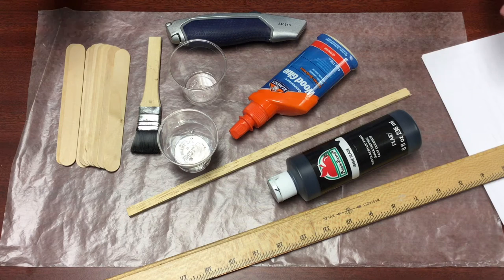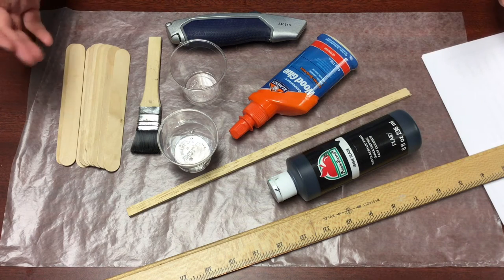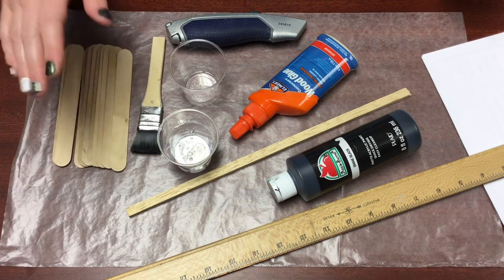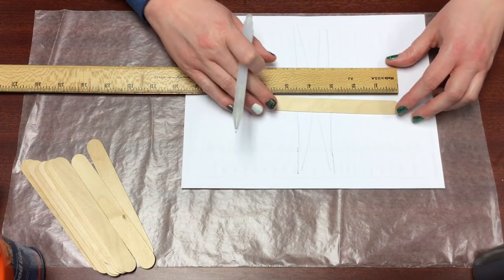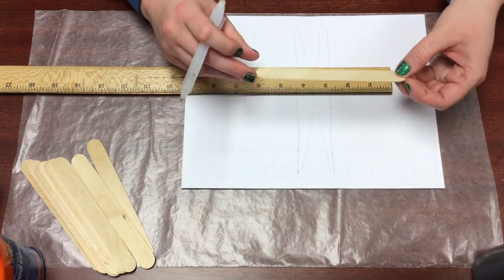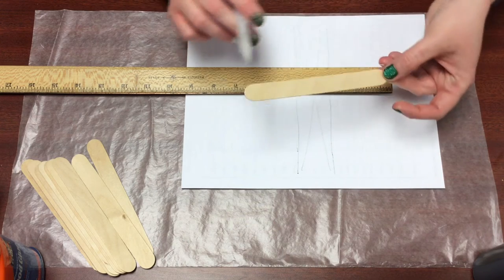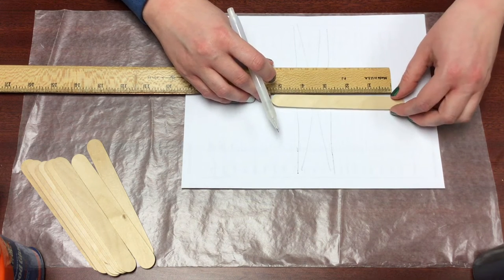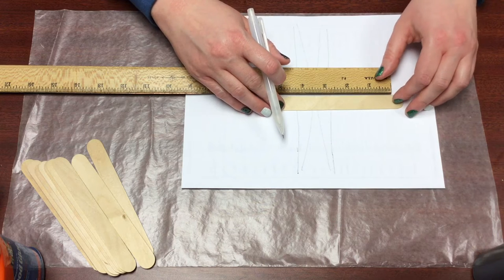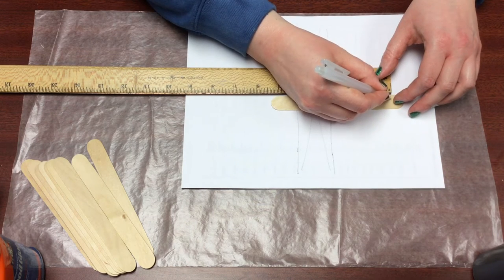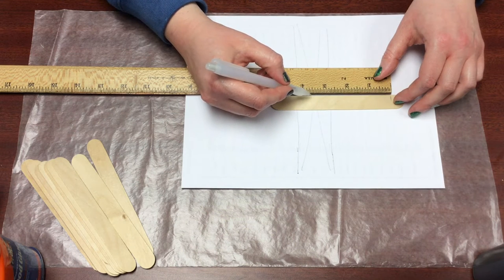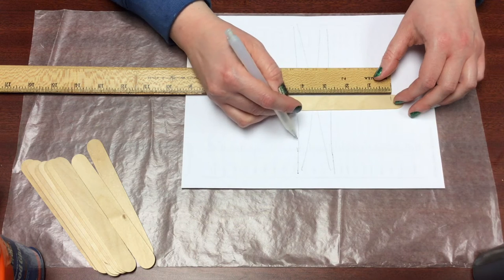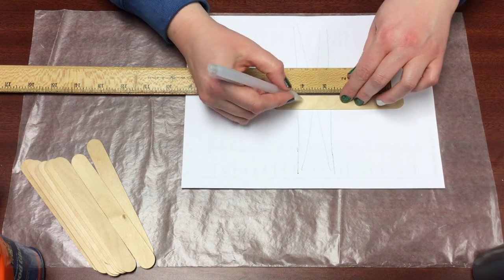So the first thing you're gonna do once you have all of your supplies gathered is you're gonna cut your craft sticks into three and three-quarter inch long pieces. So when you measure the craft sticks, measure from past the round end, so just inside the round end, just measure three and three-quarters as close as you can. If they're not perfect, that's okay.